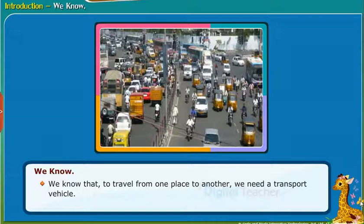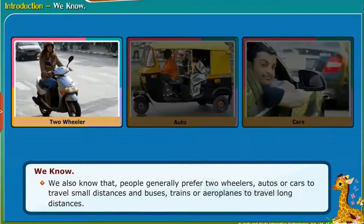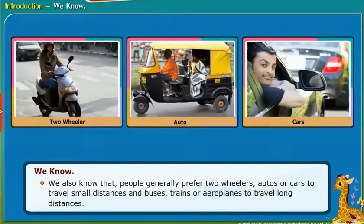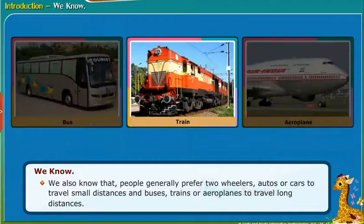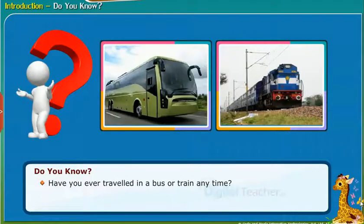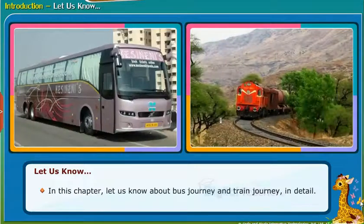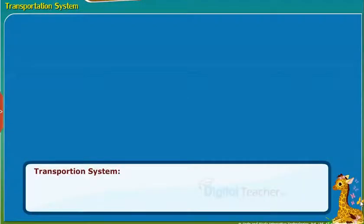We know that to travel from one place to another, we need a transport vehicle. People generally prefer two-wheelers, autos, or cars to travel small distances, and buses, trains, or aeroplanes to travel long distances. In this chapter, let us know about bus journey and train journey in detail, and first learn about the various means of transportation.